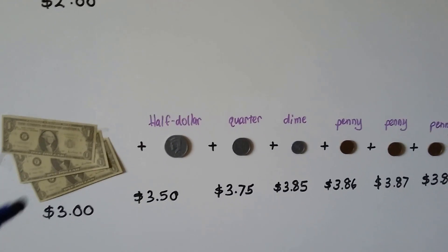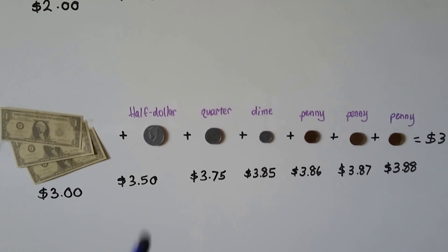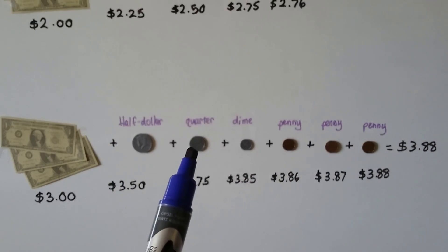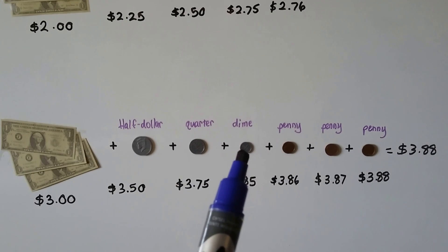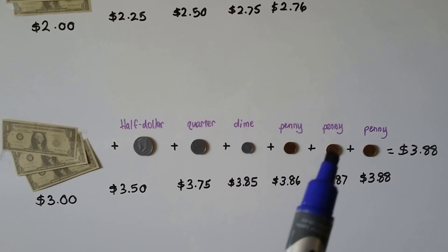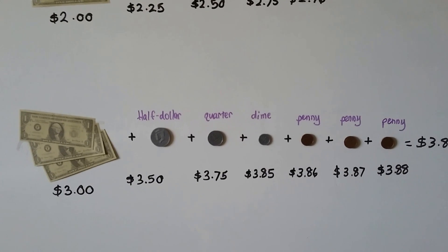Let's try it again. Now we have three one dollar bills. We have a half dollar, that's 50 cents. We have a quarter, that's 25 cents. We have a dime, that's 10 cents, and we have three pennies. That's three ones.